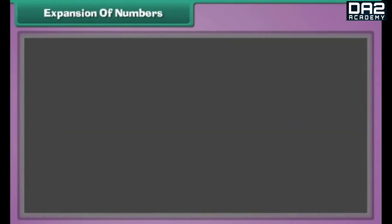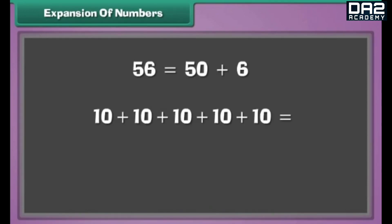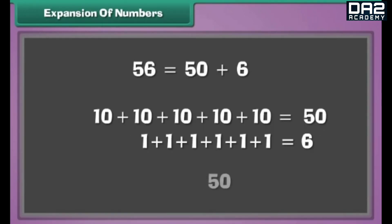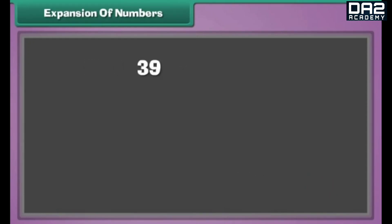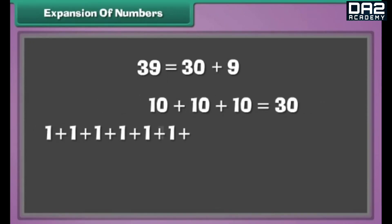Expansion of numbers. Let us break two-digit numbers into tens and ones. Fifty-six can be written as fifty plus six. It means there are five tens and six ones in fifty-six. Similarly, thirty-nine can be written as thirty plus nine. It means there are three tens and nine ones in thirty-nine.